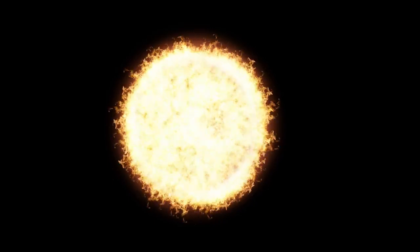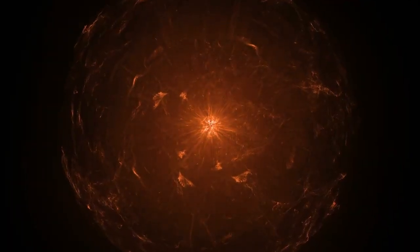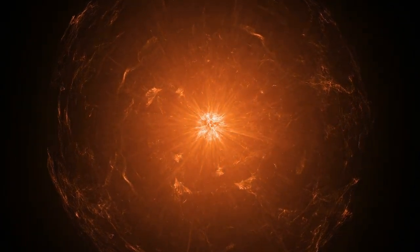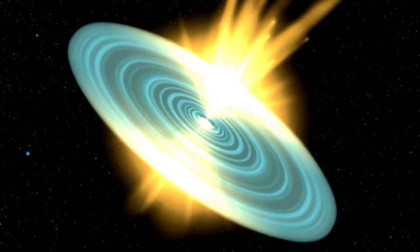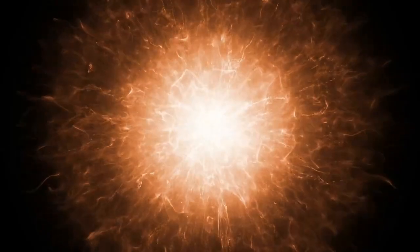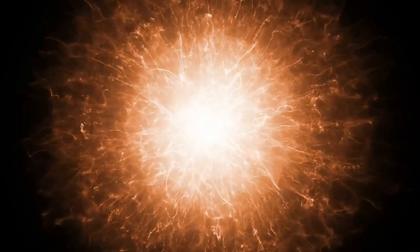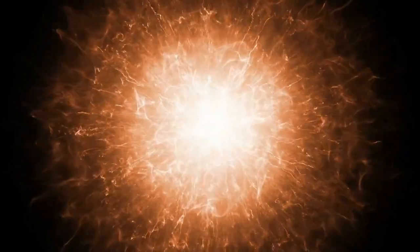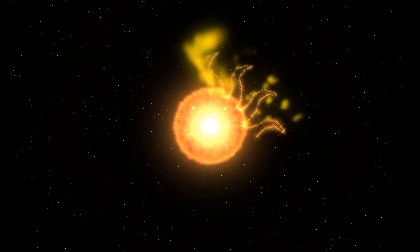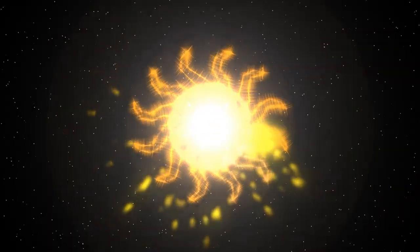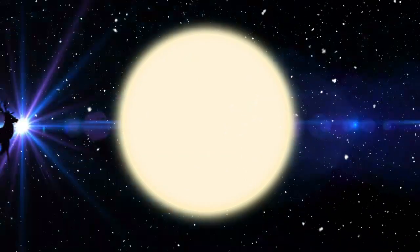Betelgeuse has been considered a supernova candidate for years, with some predicting it could erupt in the next 100,000 years. The recent surge in energy now raises the possibility that this timeline might be shorter than previously thought. The star's recent erratic behavior, when combined with this sharp brightening, suggests it may be entering a more unstable phase, possibly one that precedes a supernova.